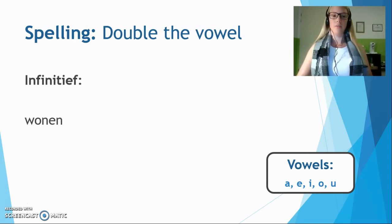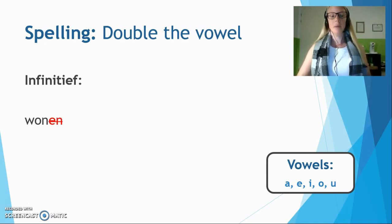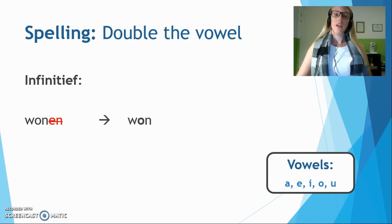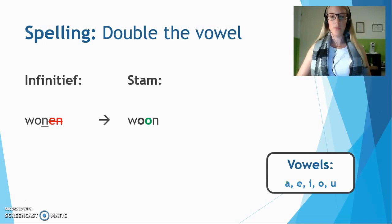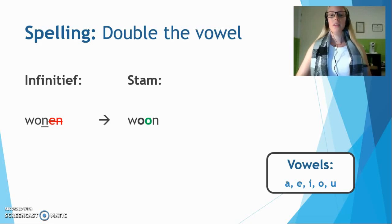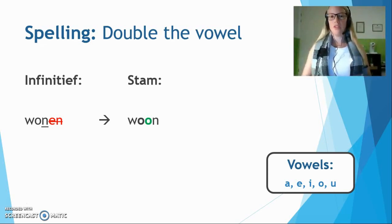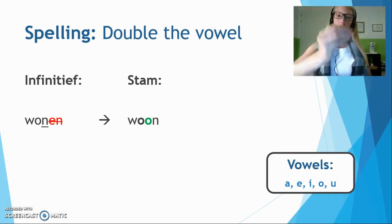So, for example, we have the word wonen — 'to live'. You would think: I follow the rule, remove -en, and then I have won. But this is not really the stam. Because once you've removed -en, if the last letter is only one consonant — you see there is one n — then you have to double the vowel that is before that consonant. In this case, the o. So the stam becomes woon.